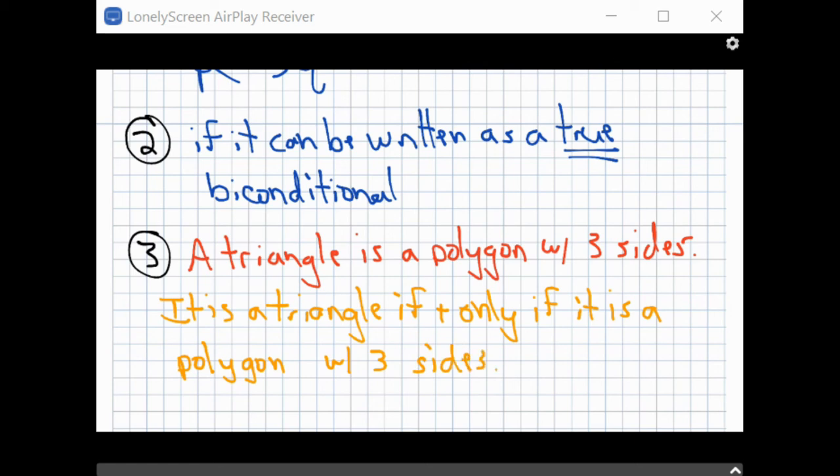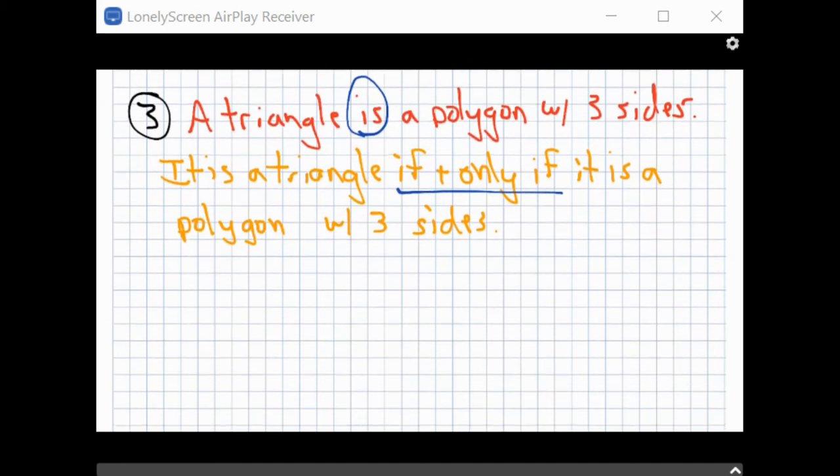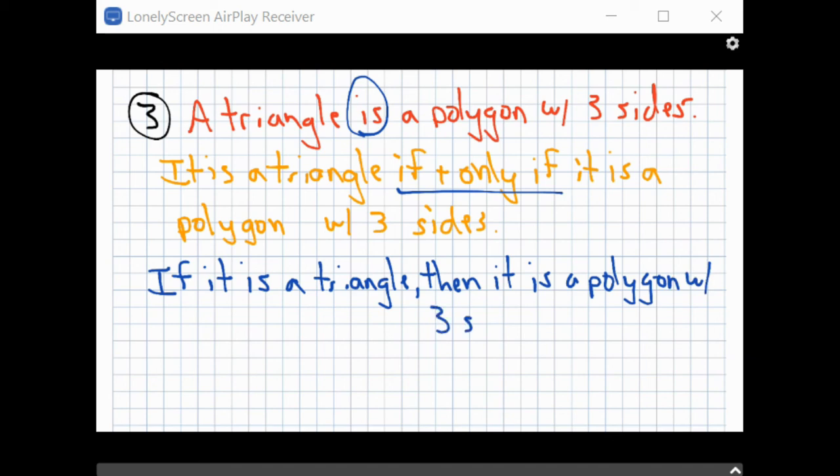So notice again there, rather kind of replacing the word is with the if and only if. Okay. So just look at the two pieces here. And then I link them into the if and only if. And so let's see. The way we can then further evaluate that is if we should be able to write this as a conditional and a converse. So if it is a triangle, then it is a polygon with three sides.